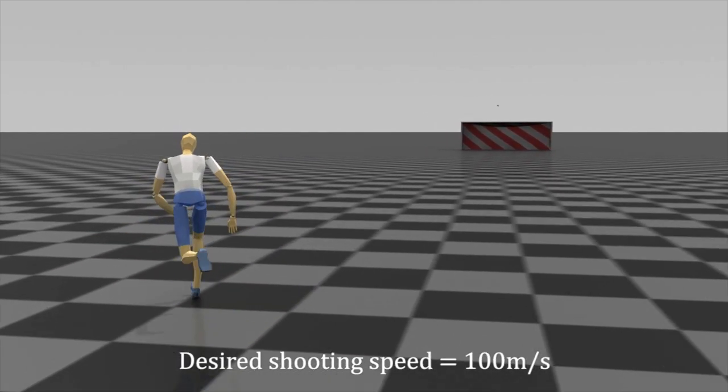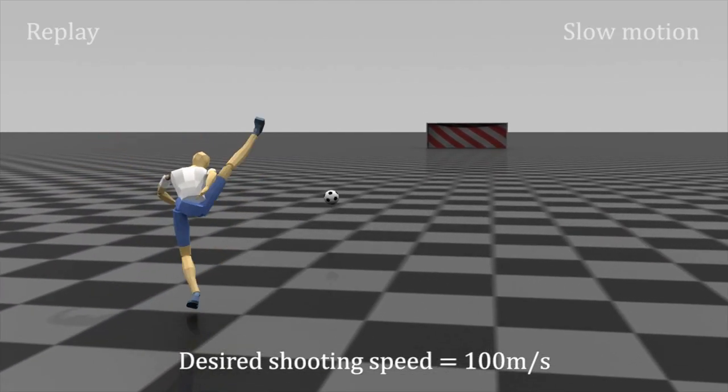Unrealistic shooting motion due to excessive target velocity. Given excessively large target velocity, the character can kick the ball very strongly but the simulated motion becomes unrealistic.